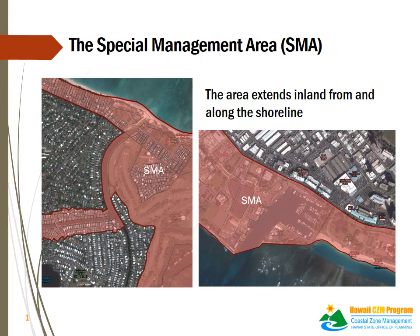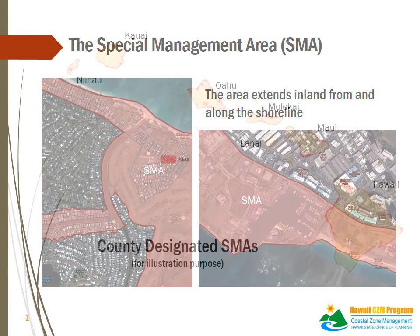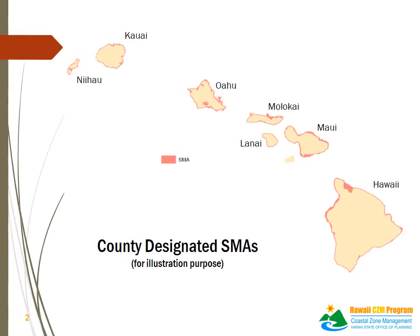The SMA is the most sensitive area of the coastal zone. The SMA is much smaller than the Coastal Zone Management, or CZM, area, which is defined as the entire state, from the top of mountains seaward to 3 nautical miles. Each of the counties in the state has designated its SMAs. The county may amend its SMA boundaries as necessary. In the case of a contraction or reduction of the SMA boundaries, the contraction is subject to the State Office of Planning's review and determination.